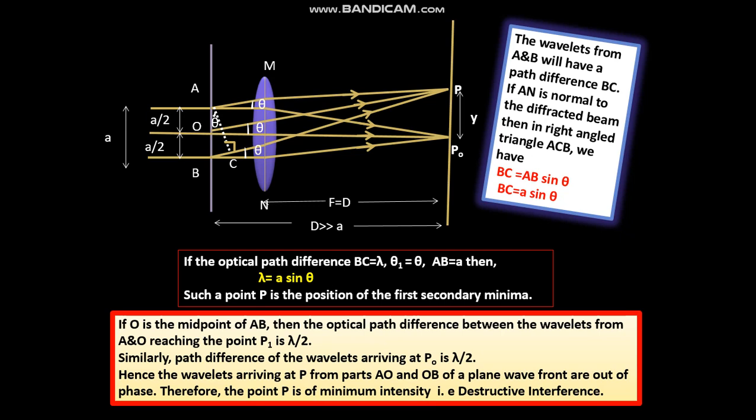Hence, the wavelets arriving at P from parts AO and OB of a plane wavefront are out of phase. Therefore, the point P is of minimum intensity. That is, we have destructive interference.